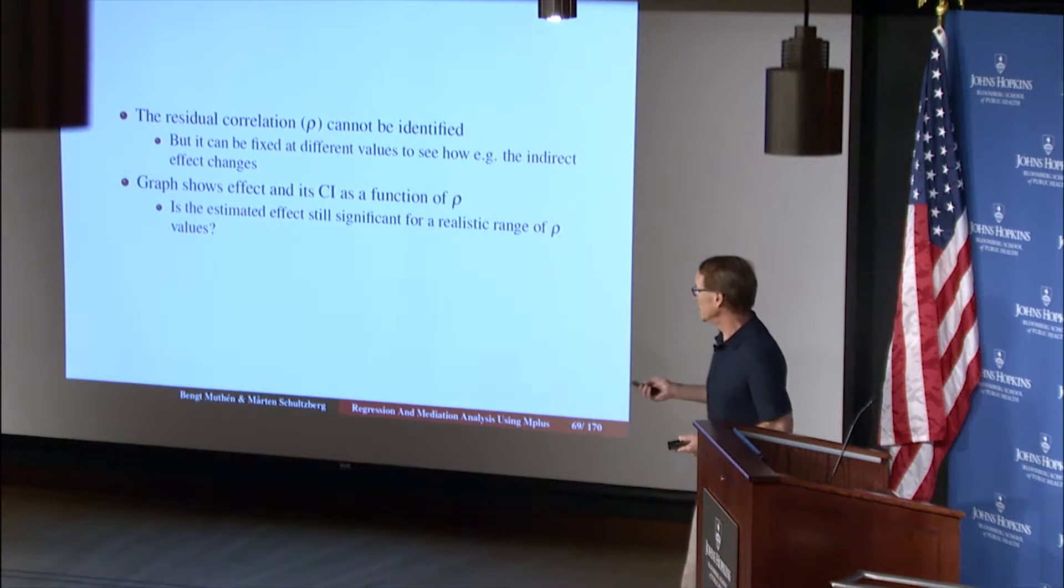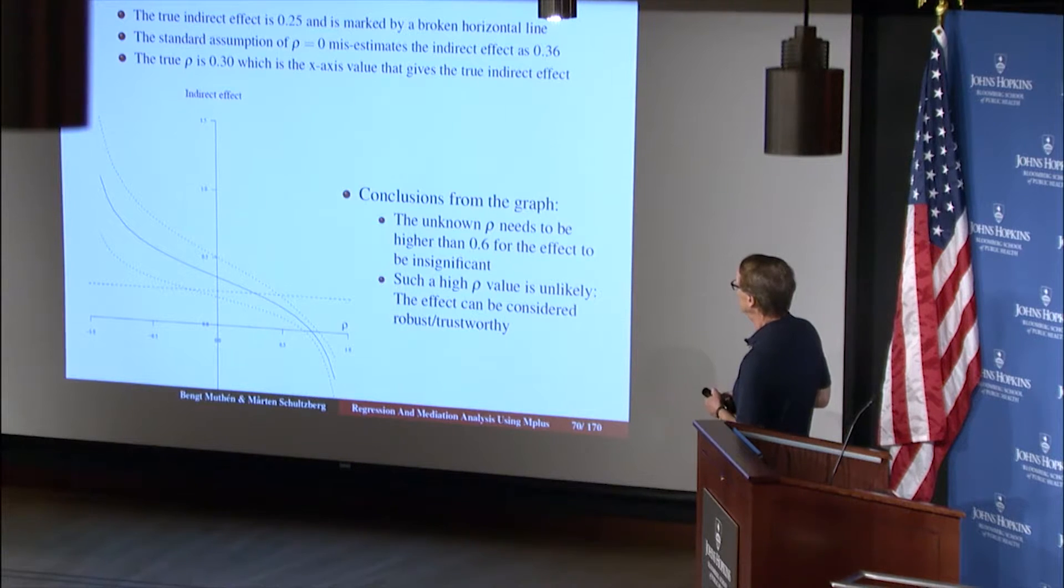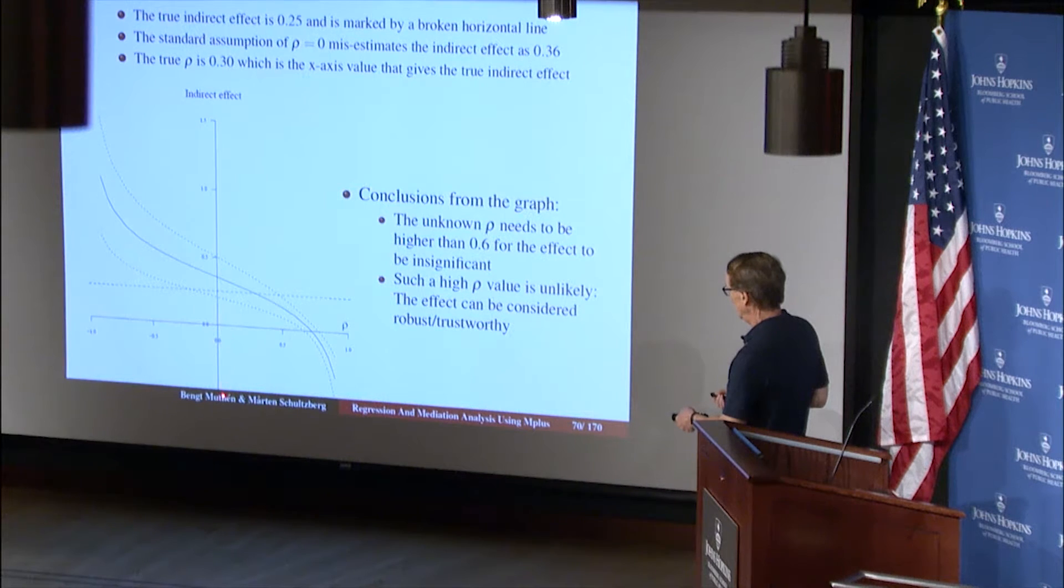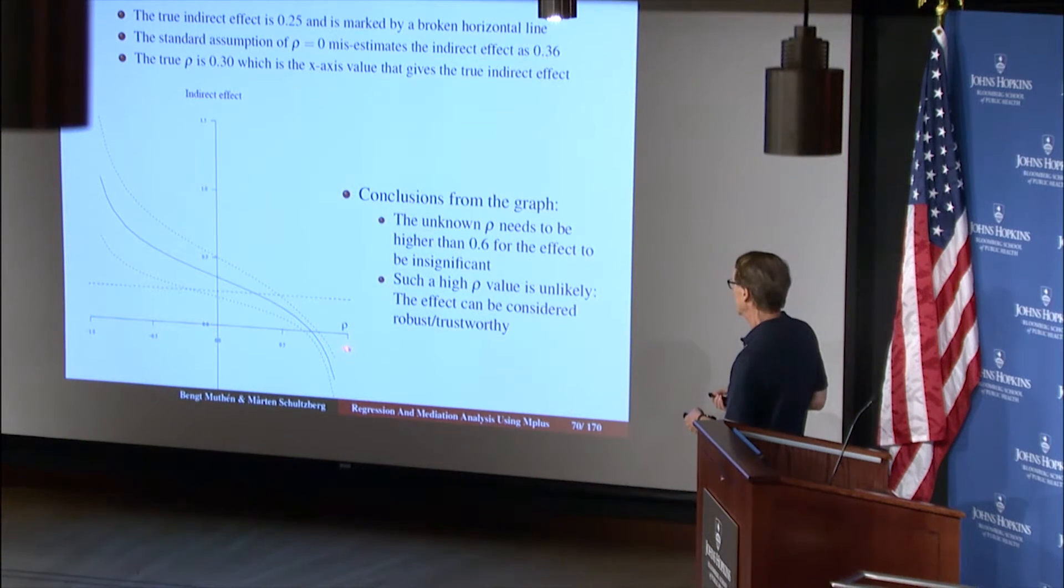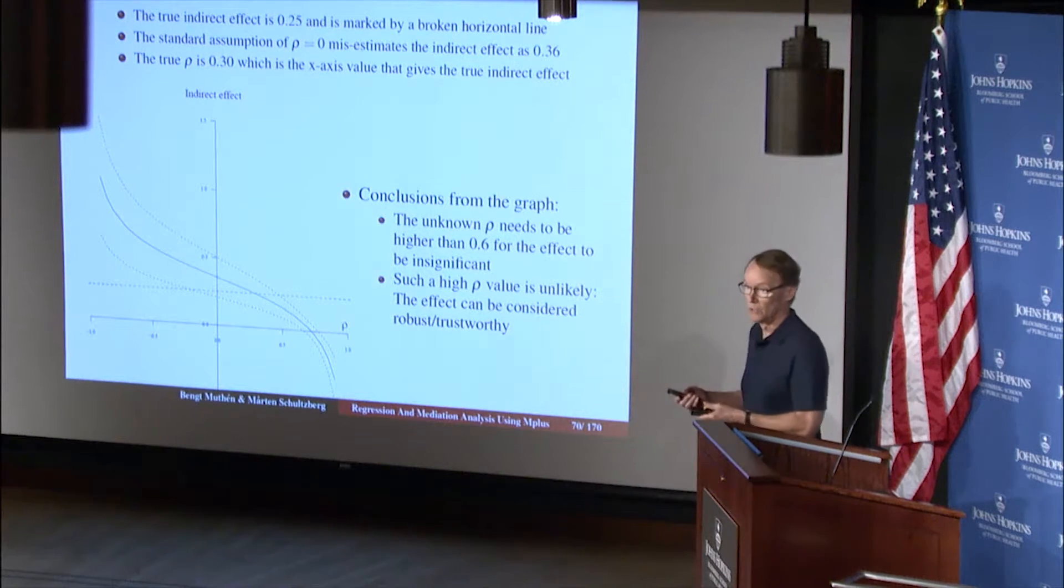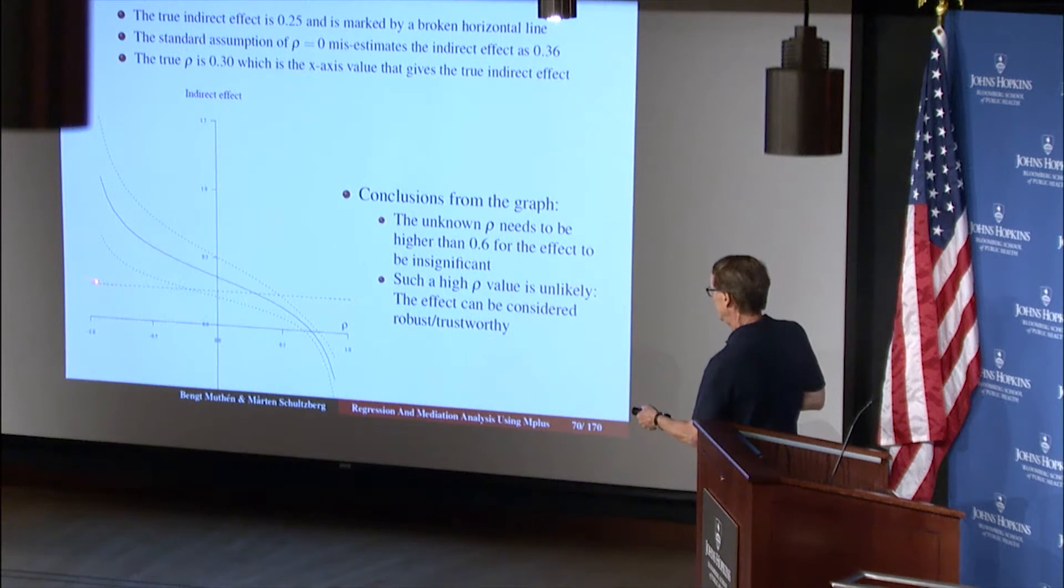So I'll give you an example of that. It's in the simulated part of the sensitivity analysis description. So here we're looking at the indirect effect on the y-axis, and on the x-axis you have rho, the correlation between the residuals. You're going to go from minus 1 to plus 1. And here we have a situation. We can follow the bullets here. It's very clearly laid out. The true indirect effect is 0.25. You can write 0.25.